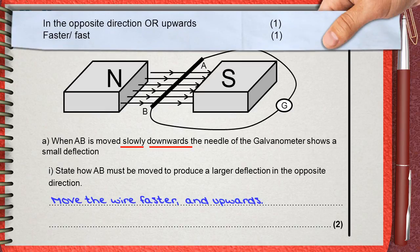The mark scheme says in the opposite direction or upwards for one mark, faster or fast for the other mark. These are the two marks in the answer.